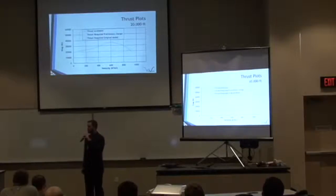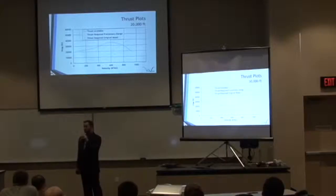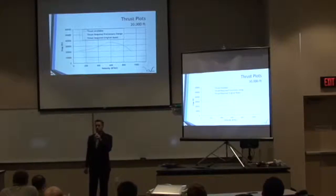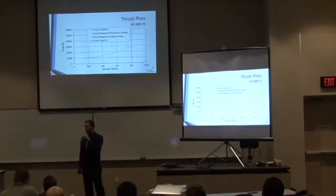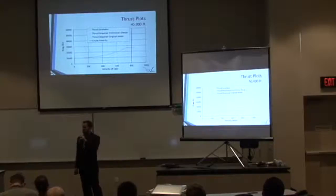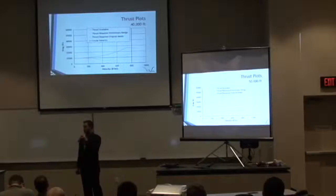A similar trend of maximum speed reduction is seen at 20,000 feet. You may notice a peak in the thrust available — this is due to the F-119 design point not being at sea level. At 40,000 feet, our cruise altitude, we do have excess thrust at our cruising velocity of 800 knots — Mach 1.4 at 40,000 feet, as indicated by the violet vertical line.